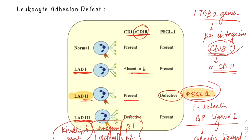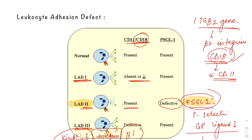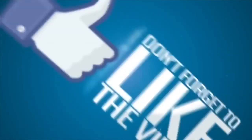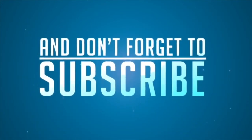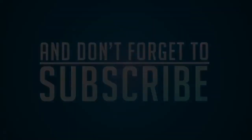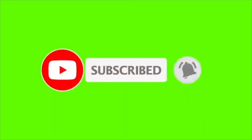These were the three main types of leukocyte adhesion defect — just a brief introduction. For more details and related questions, you can refer to the lecture named 'Leukocyte Adhesion Defect.' This brings me to the end of the lecture. Hope you all liked the video. For more immunology videos, follow the link to the playlist named 'Immunology Made Easy.' Don't forget to like, comment, share, and subscribe.